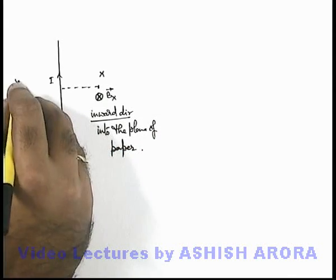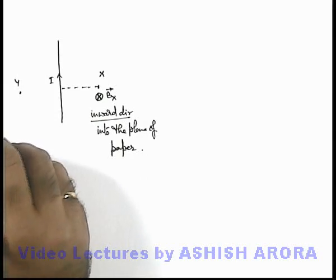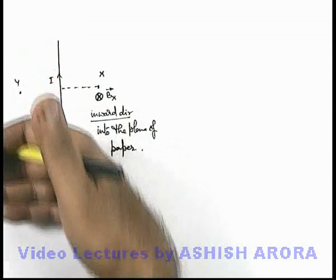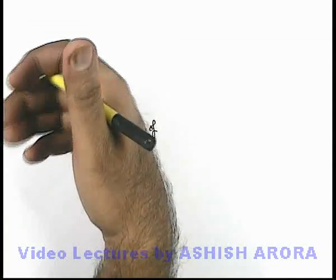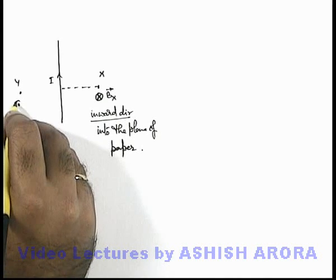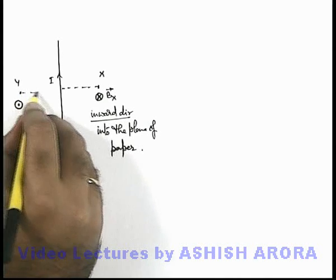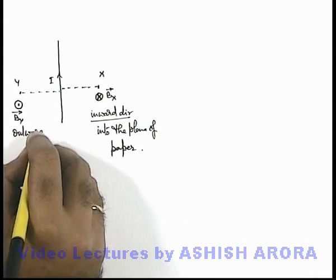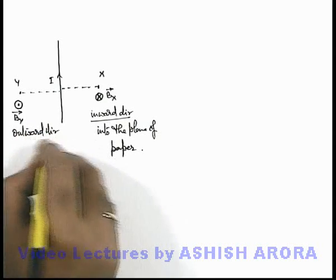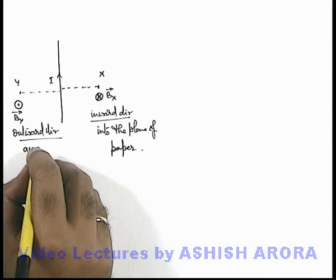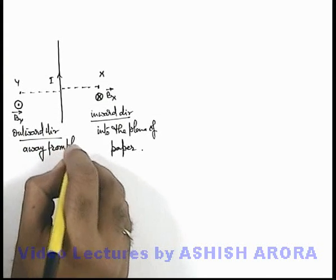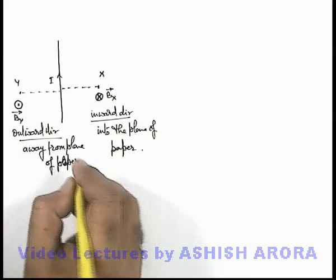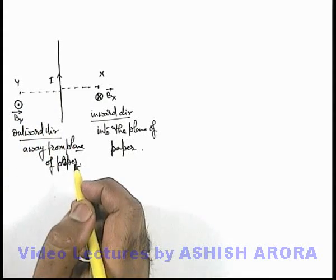Similarly, if I take a point Y on the other side of the wire and apply the right-hand thumb rule — putting the right-hand thumb along the direction of current — my fingers will be pointing in the upward direction, which is denoted by a dot in a circle. This is the direction of the B vector at Y, which is the outward direction, written as away from the plane of paper. This is the way how we find out the direction of magnetic field in the surrounding of a wire.